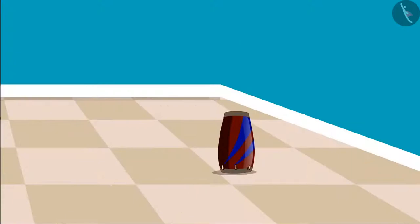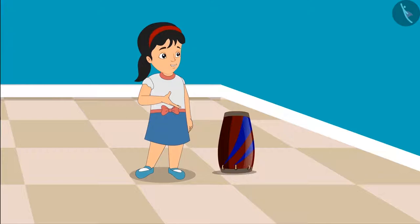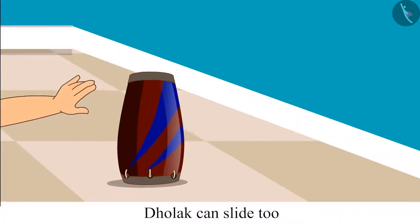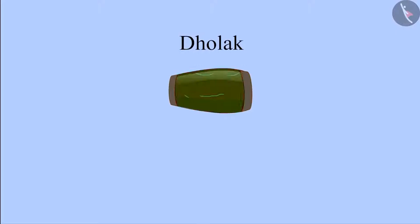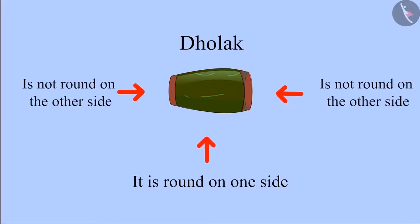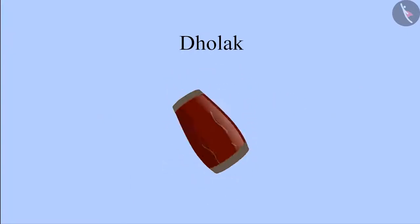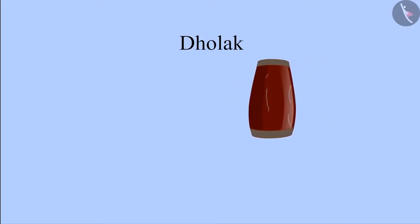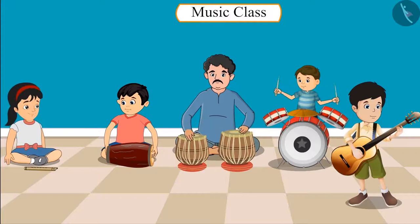After some time, Pinghi looked at another dholak. Hey Chotu, just see, we can also slide this dholak. Yes, Pinghi, you are right. This means that dholak is round from one side and not round from the other side. The dholak will roll if it is on the round surface, and the dholak will slide if it is on the surface which is not round. This means we can roll the dholak as well as slide it.